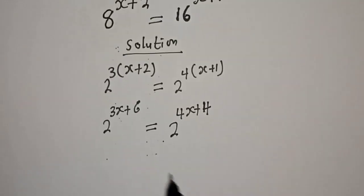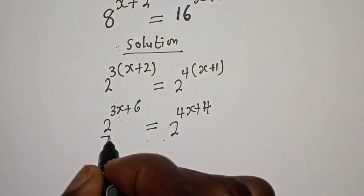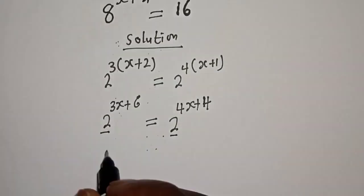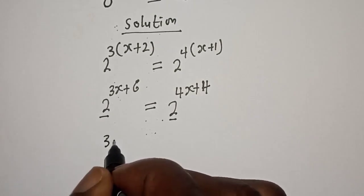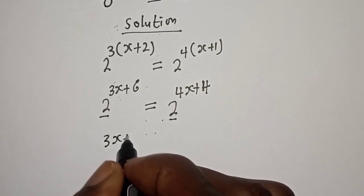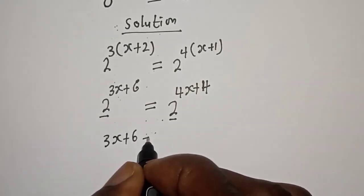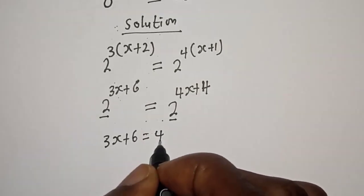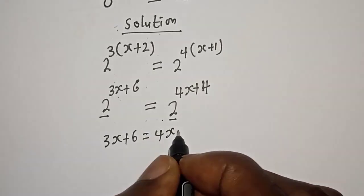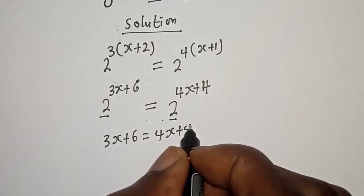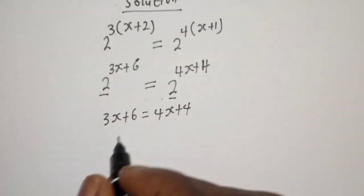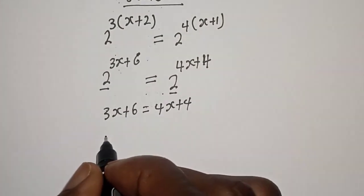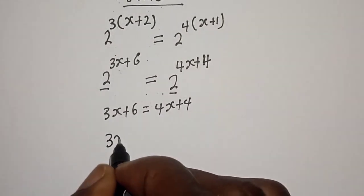We have the same base 2, so we work with the exponents: 3s plus 6 is equal to 4s plus 4. Let's collect like terms.